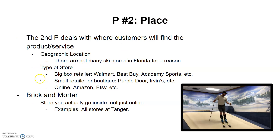The second aspect of place is what type of store. Is it a big box retailer like Walmart, Best Buy, or Academy — really big, well-known stores you see everywhere? Is it going to be in a small retailer like a boutique, locally owned one-off stores? Or is it going to be online only — Amazon, Etsy, or maybe the company has their own website where they sell their product? So there are two decisions: geographic location and what type of store.